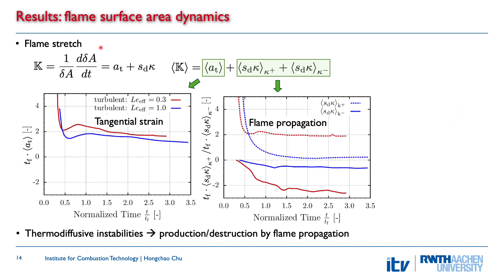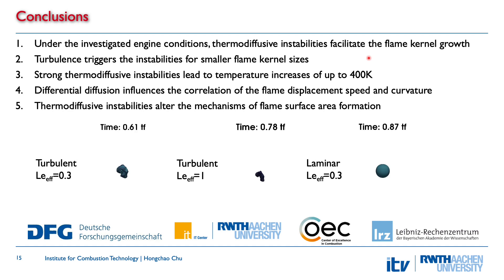The flame surface area dynamics are also influenced by thermodiffusive instabilities. The change of flame surface can be described by flame stretch, which is a combined effect of tangential strain and flame propagation. The effect of flame propagation is distinguished by surface production for positive curvatures and surface consumption for negative curvatures. The effects of tangential strain are similar for both kernels because they have the same Karlovitz number; however, the effect of flame propagation is significantly increased for the thermodiffusive unstable flame kernel.